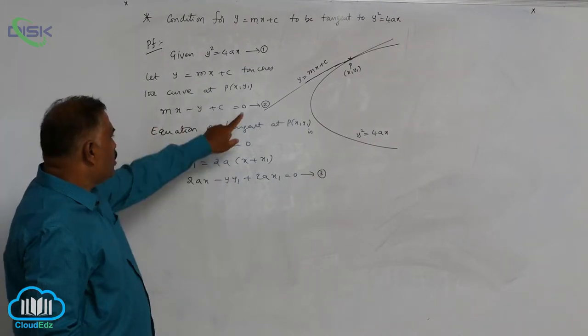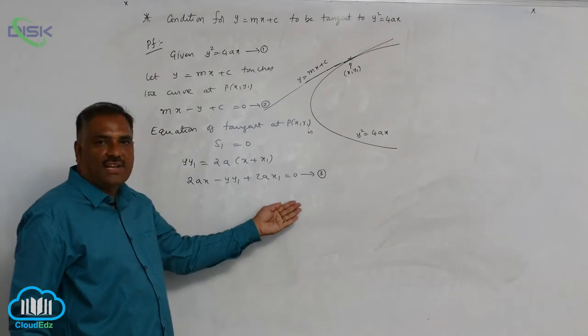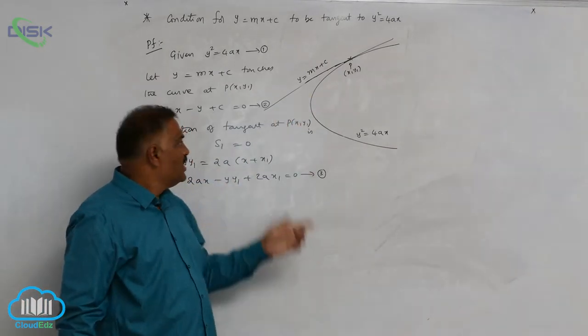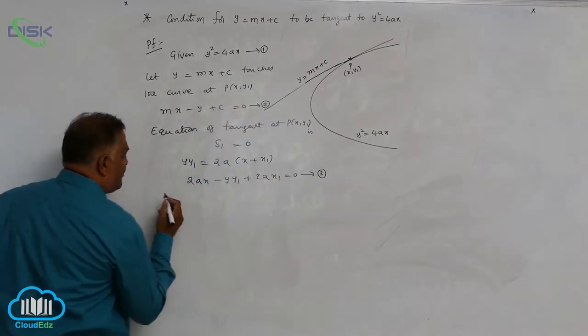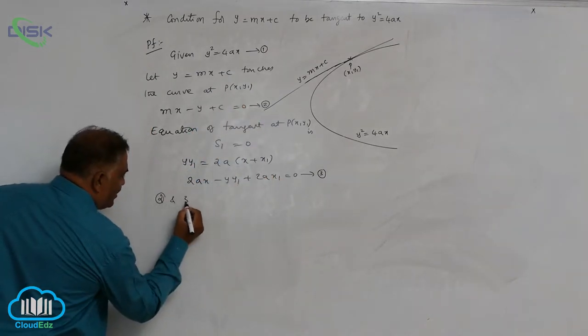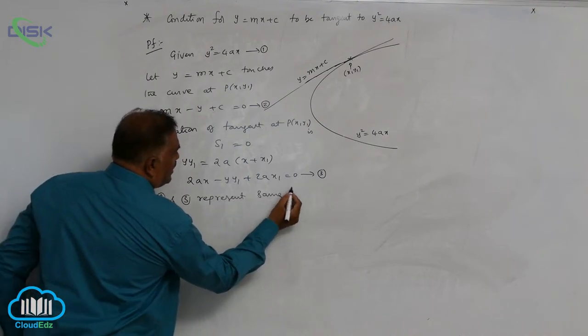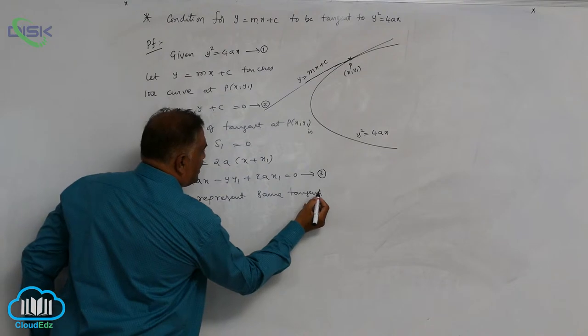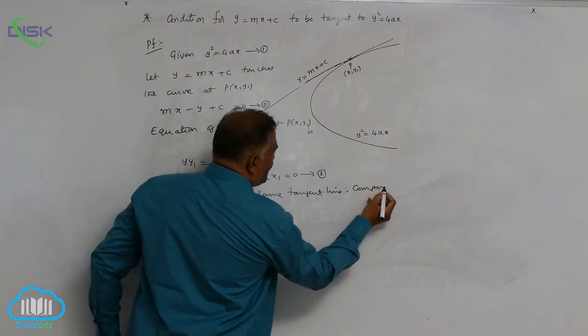Equation 2 is a tangent at P(x₁, y₁). Equation 3 is also a tangent at P(x₁, y₁). Both equations represent the same tangent line. Hence, we compare the coefficients.